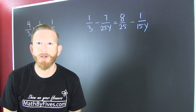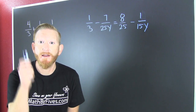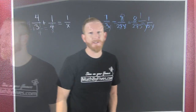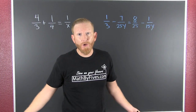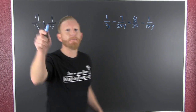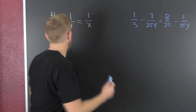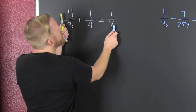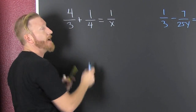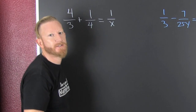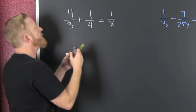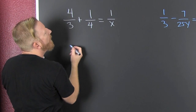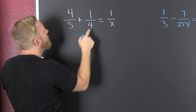Solving rational equations — the first examples, with some harder ones to follow. On these, we see that we have rational equations, meaning that we have fractions. So in order to get rid of the fractions, we need to multiply by the common denominator.